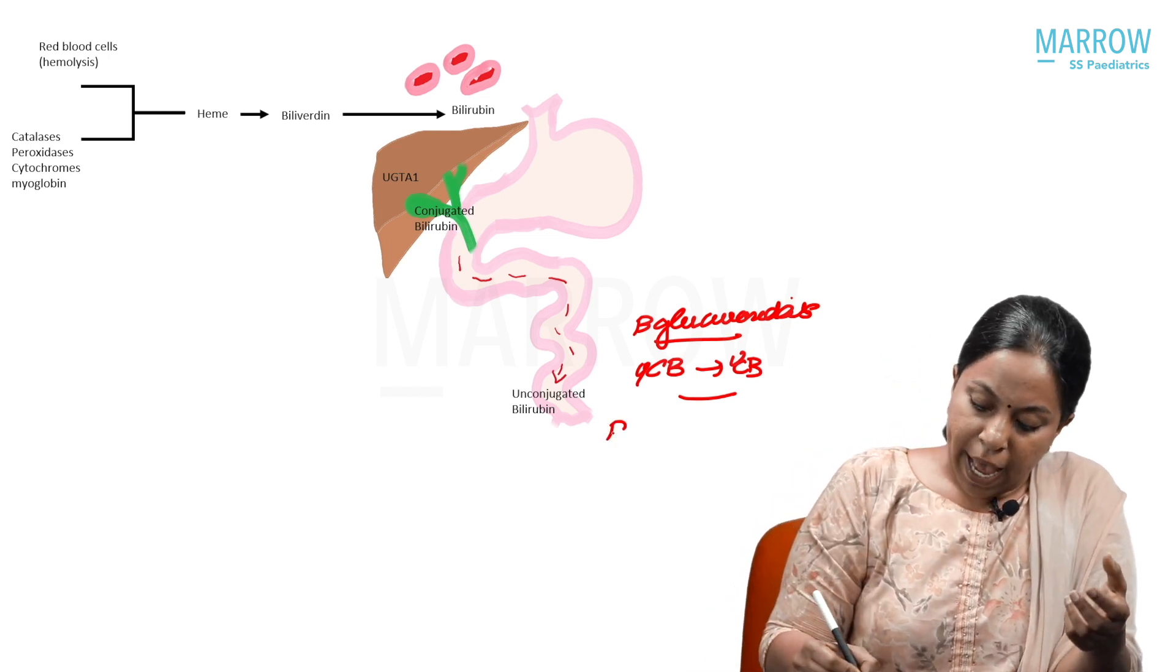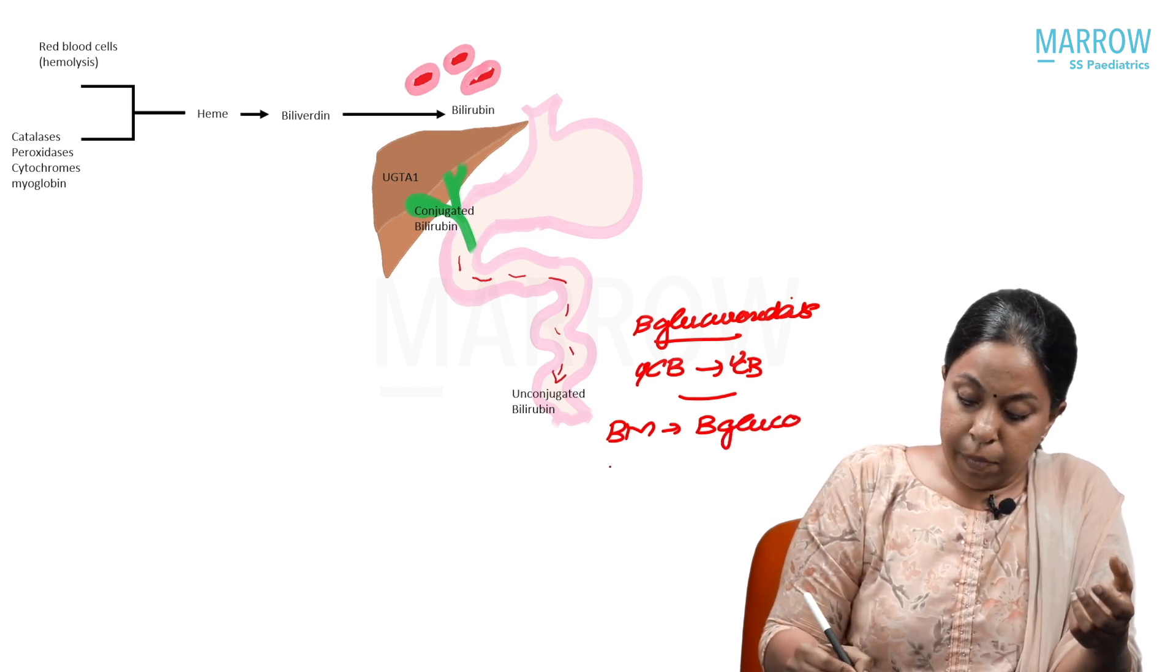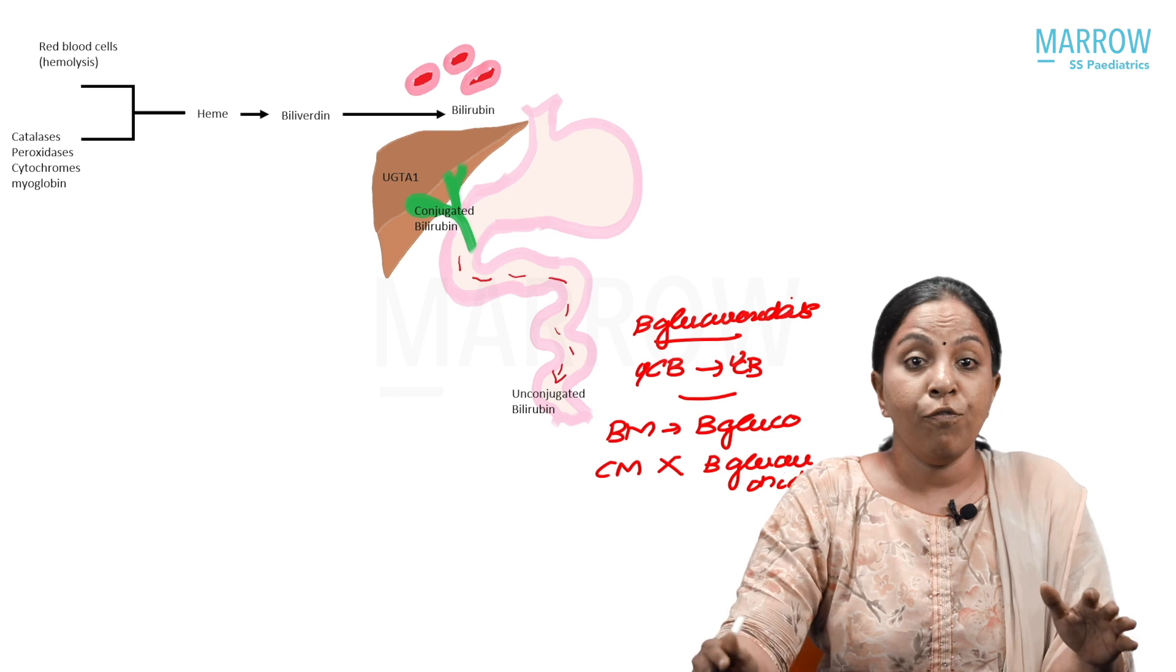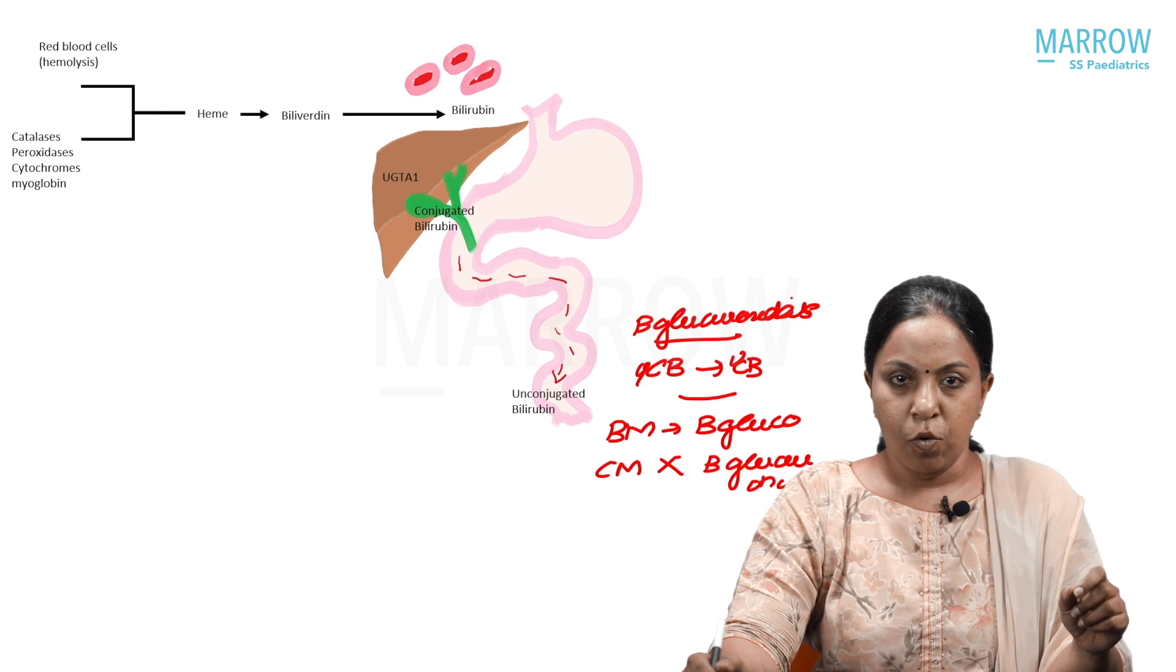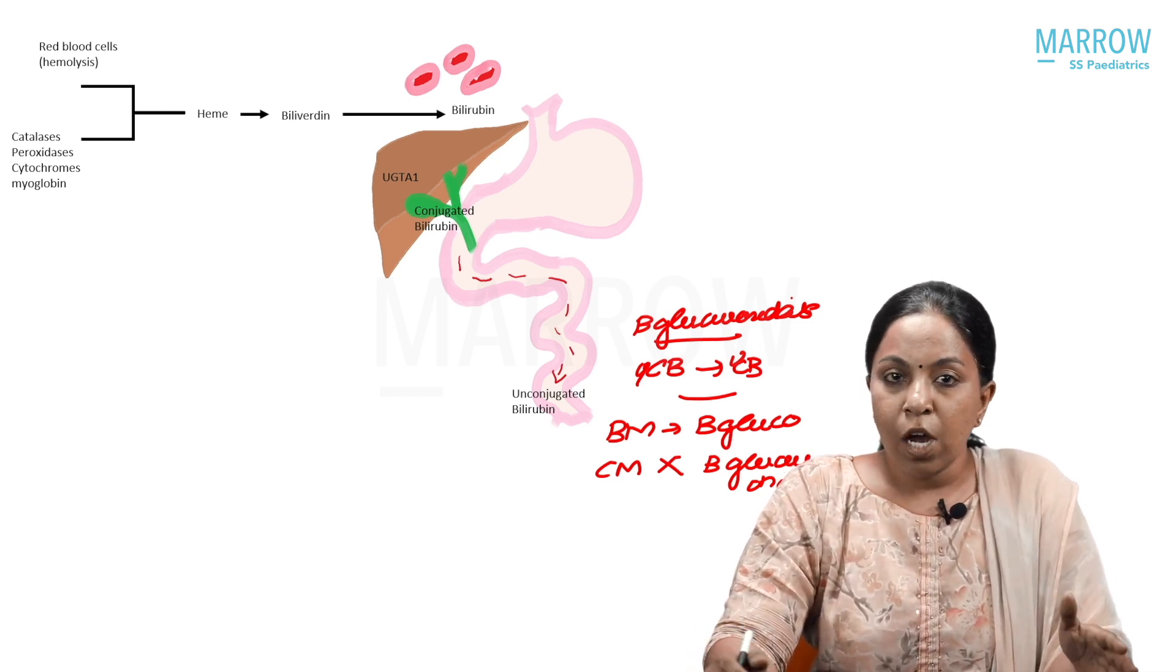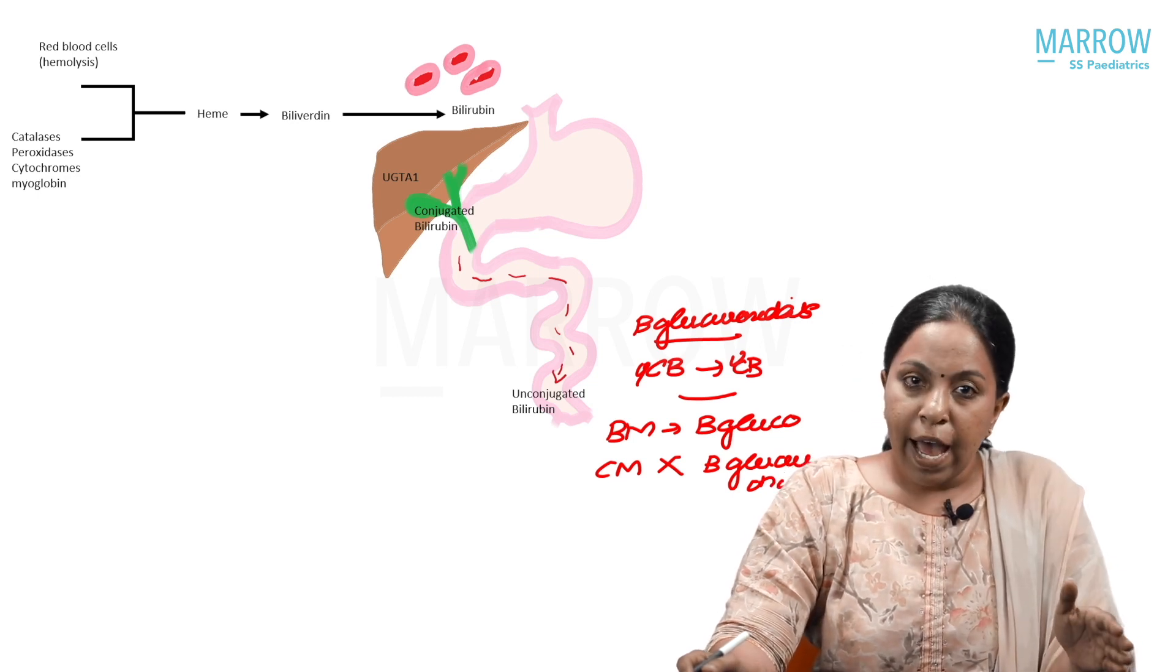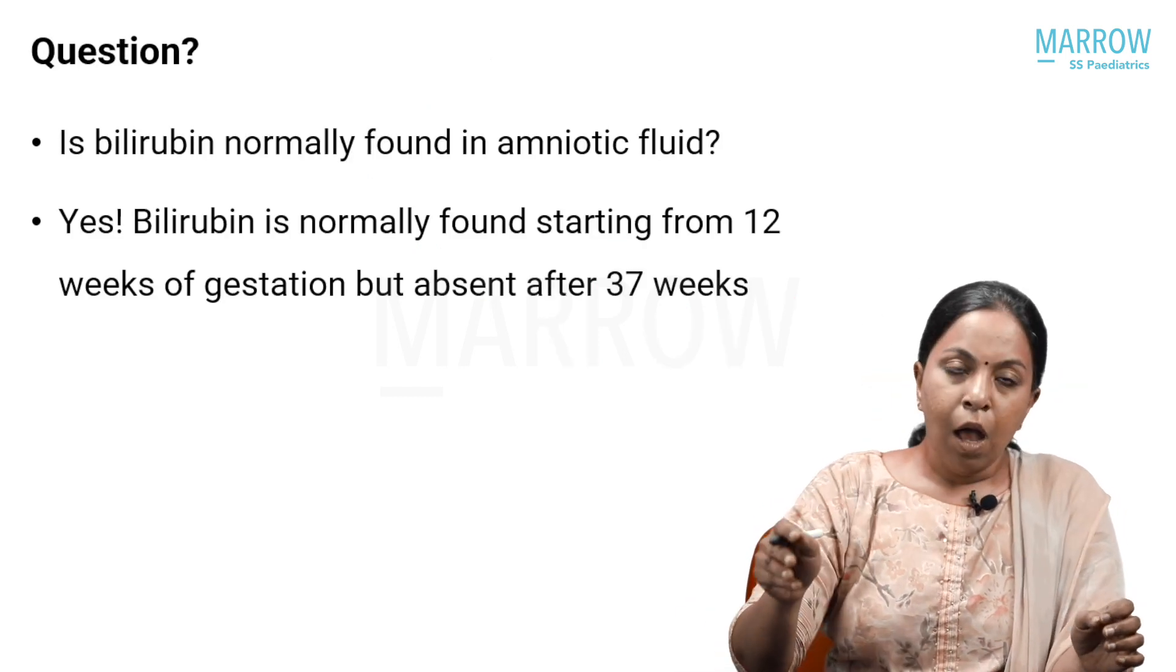Breast milk also has this beta-glucuronidase enzyme, whereas cow milk has an inhibitor of beta-glucuronidase. That is why exclusive breastfeeding, though very beneficial, becomes a risk factor for high jaundice in neonates. In the intestinal lumen, there is an enzyme called beta-glucuronidase which converts conjugated bilirubin into unconjugated bilirubin again and pushes it into the circulation. Breast milk also has beta-glucuronidase, and cow's milk has an inhibitor of beta-glucuronidase.